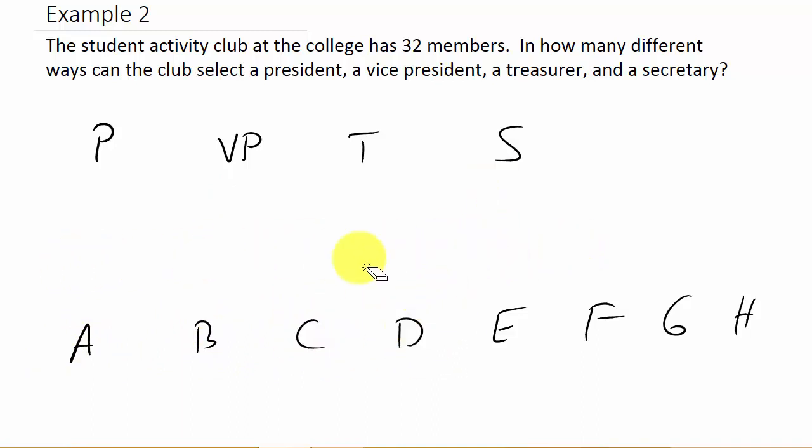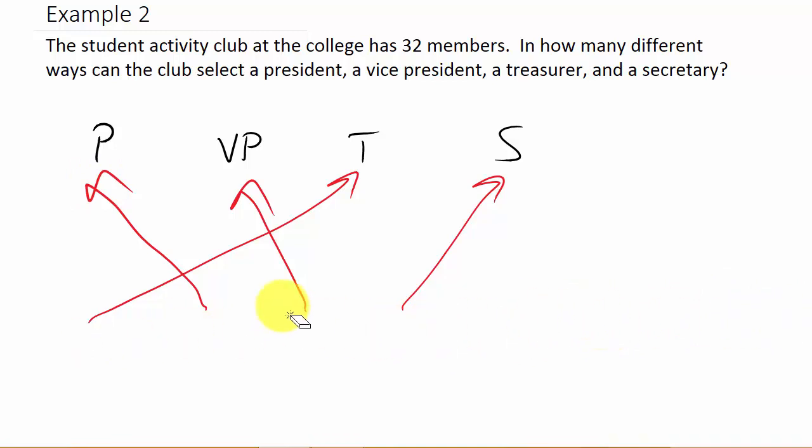Well what if I chose B first, then C, then A, and then D? I chose the same four but in a different order. So now B is president, C is vice president, A is treasurer, and D is secretary. It made a difference because the first time I chose A, B, C, and D and A was president, but since I chose B first, B's president. That's a different cabinet.